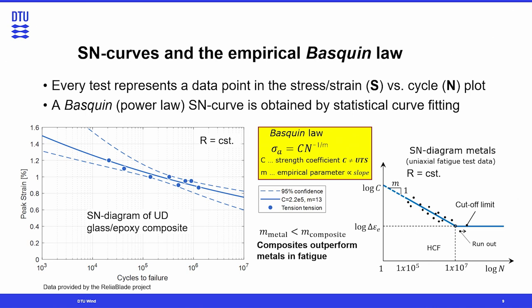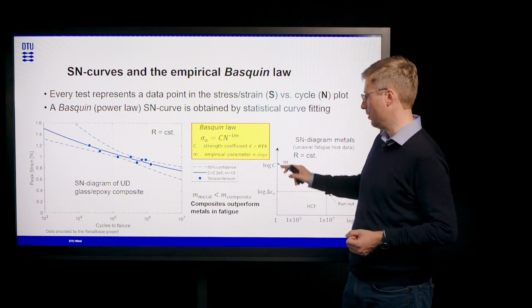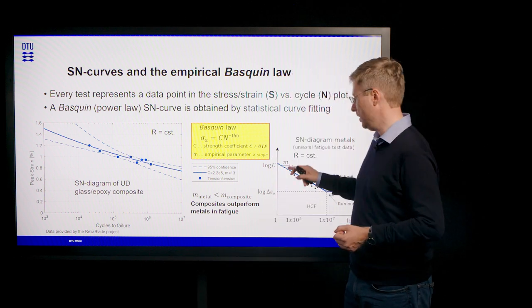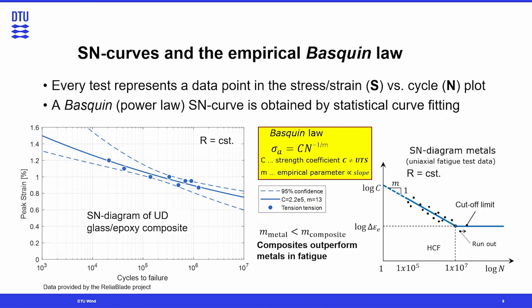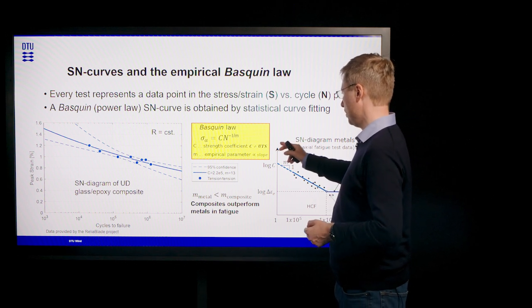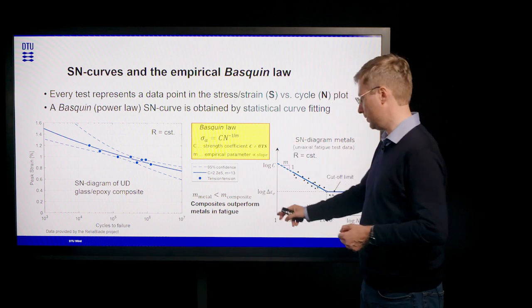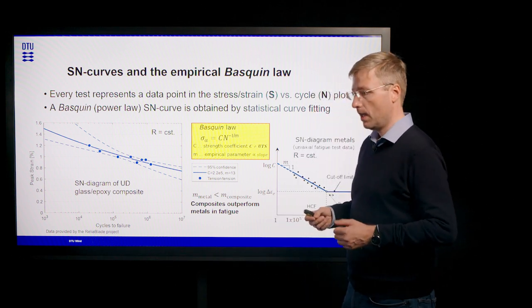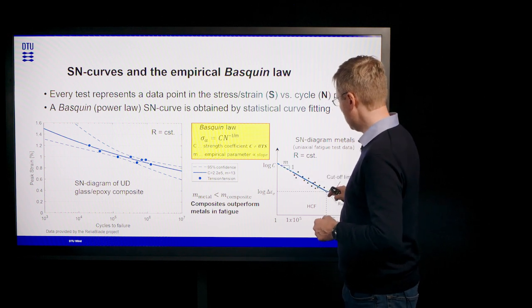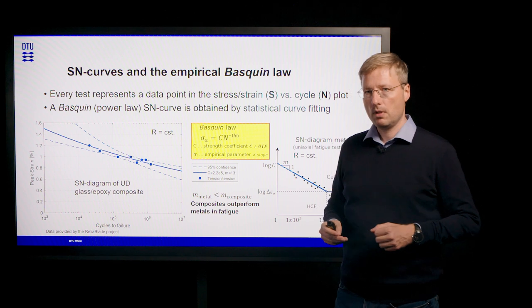It was Basquin who proposed this power law, which relates the stress amplitude to the number of cycles through empirical constants obtained from a curve fitting process. These two empirical constants are C, the intercept of the SN curve with the ordinate, and M, which represents the inverse slope in the SN diagram. The Basquin law is a purely empirical law that relies on fatigue testing. Traditionally, we plot the amplitudes or ranges versus the number of cycles in a double logarithmic plot, where the data points and the SN curve appear as a straight line.